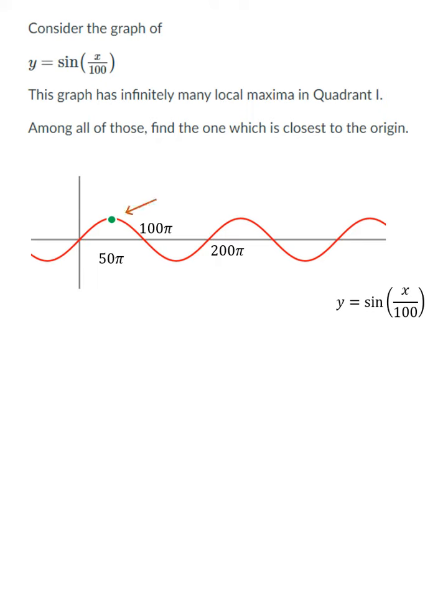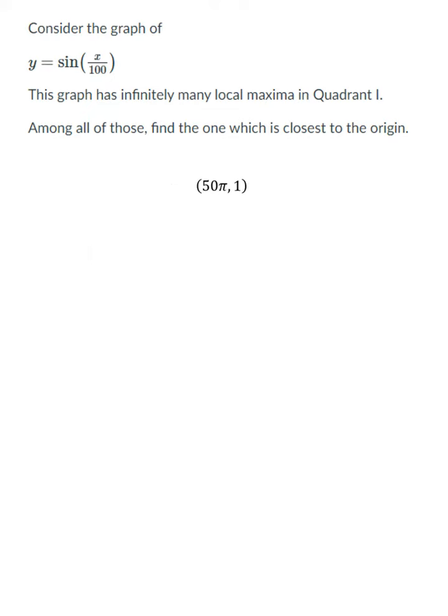that shows me that of all the infinitely many local maxima in quadrant 1, this one nearest to the origin would, of course, be 50 pi comma 1. And that completes this problem.